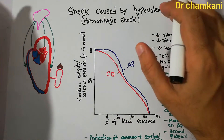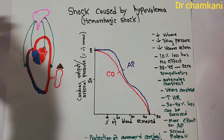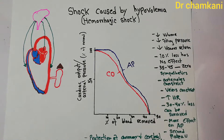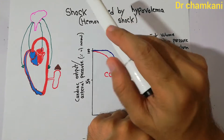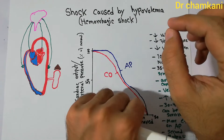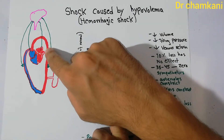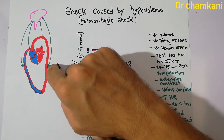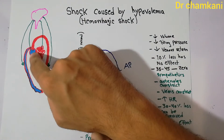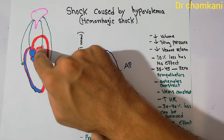Hemorrhagic shock is a common shock we see in the accident and emergency department and in other departments as well. Shock is defined as a condition in which there is a decreased or inadequate supply of oxygen and other nutrients to the body. Normally the heart pumps blood to different organs, which consume oxygen and nutrients, and then deoxygenated blood returns to the heart, gets pumped to the lungs, becomes oxygenated, and is repumped.